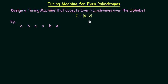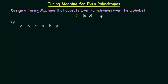I hope you already know what even palindromes are. We already designed even palindromes using pushdown automata in our previous lectures. Let me just repeat once more: palindromes are those strings which are the same whether you read them from the left or from the right. For example, the string A B A A B A — if you read it from the right side, it is still A B A A B A. We call it an even palindrome because the number of symbols in the string is even — here we have 6 symbols, which is an even number.